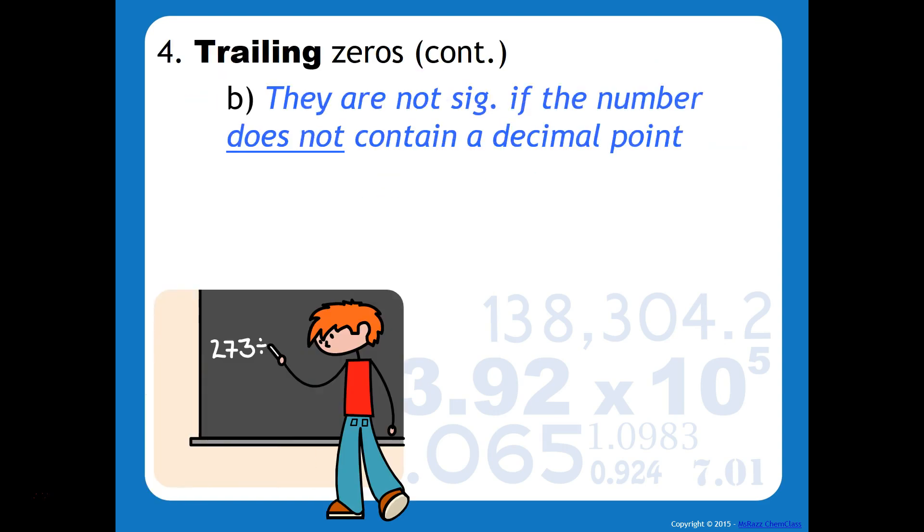However, trailing zeros are not significant if the number does not contain a decimal point. For example, in the number 1550, there is no decimal point at the end, so therefore only the 1, 5, and 5 are considered significant.